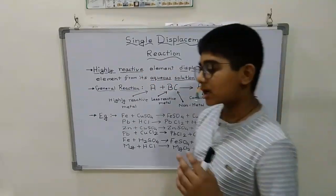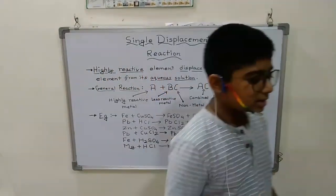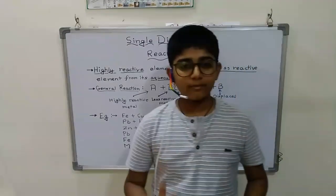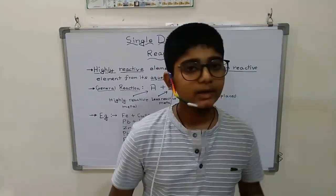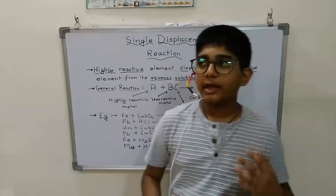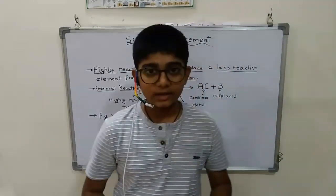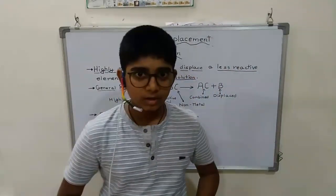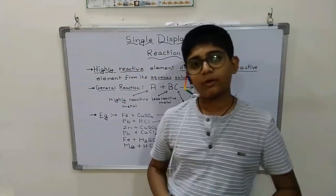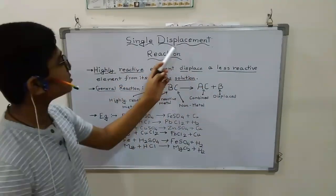We have a lot of types of reactions given by our chemist buddies. So let's understand them one by one. There are basically displacement reaction, double displacement reaction, then we have reduction reaction, oxidation reaction, redox reaction, decomposition reaction, combination reaction, and a lot more. So we will start with single displacement reaction.